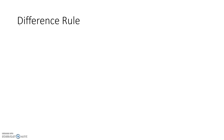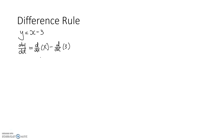The difference rule is basically the opposite of the sum rule. If you have an equation, for example y equals to x minus 3, when you differentiate it you differentiate the x term and subtract the differential of the constant. Differentiate x and you get 1, minus the differential of 3 which is 0. You get 1.